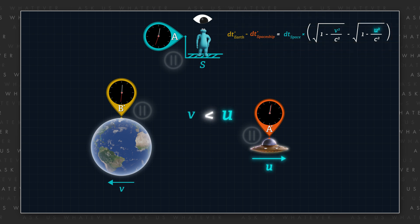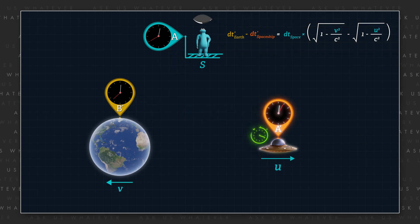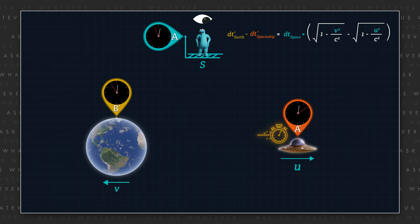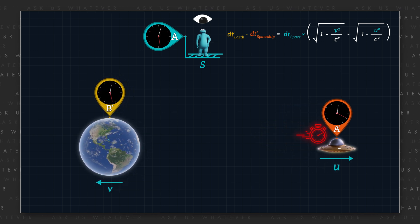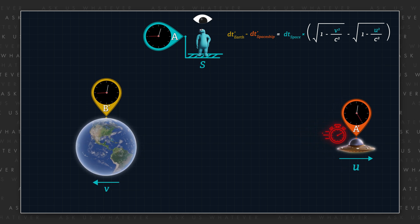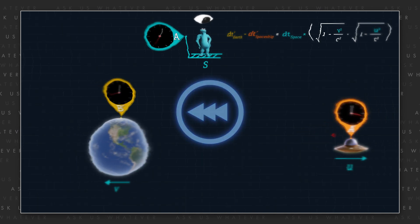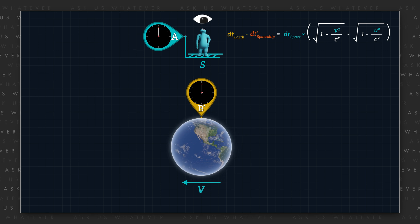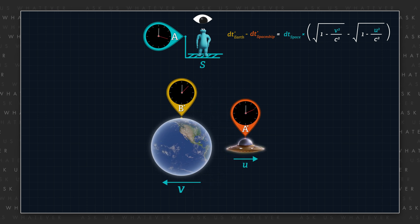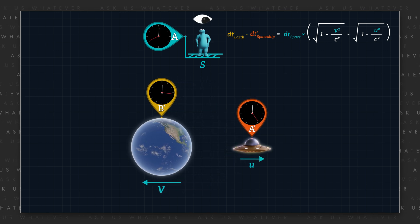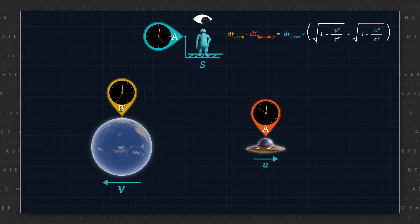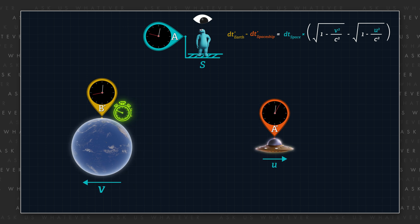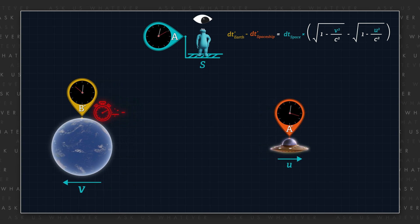If u is greater than v, then the twin on the spaceship would experience a greater slowing of clock tick rate than the twin on the Earth, which might possibly represent a slowing of the aging process for the twin on the spaceship. But if the Earth is zipping through space and the spaceship moves in the opposite direction, causing the spaceship to move slower than the Earth through space, then the twin on the Earth would experience clocks on the Earth ticking at a slower rate than clocks on the spaceship.